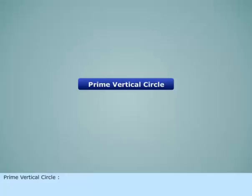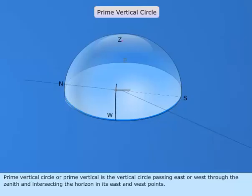Prime Vertical Circle, or Prime Vertical, is the vertical circle passing east or west through the zenith and intersecting the horizon in its east and west points.